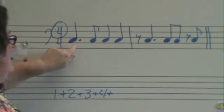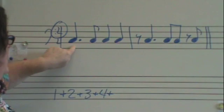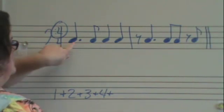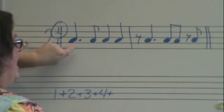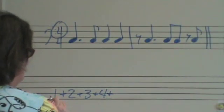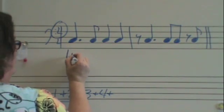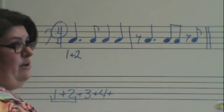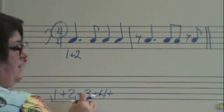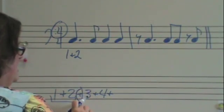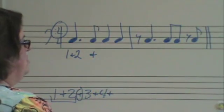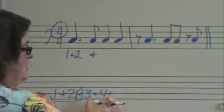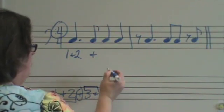Dotted quarter notes get one and a half counts. One and a half counts is equal to three of these pieces. Since the dotted quarter note comes first, I'm going to take the first three pieces and put it under the dotted quarter. Eighth notes are only worth half of the count, so they only get one piece of counting. I'm going to take the next available piece and put it under the eighth note. Quarter notes are a full beat — they get two pieces of counting.